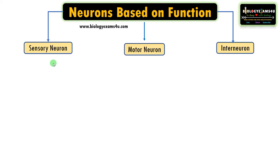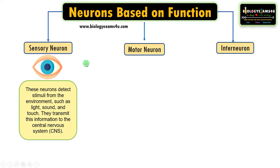Sensory neurons are the neurons that detect stimuli from the environment such as light, sound, touch, etc., and transmit this information to the central nervous system. These neurons often have long dendrites that extend from the cell body to receive signals from sensory receptors like skin receptors, and these signals are then transmitted to the central nervous system along the axon.